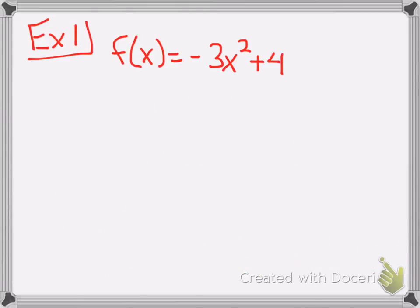First example, we're going to determine if it's even, odd, or neither. What I'm going to do to determine whether it's even, odd, or neither is I'm going to rewrite the function. I'm going to use negative x as my new input. It's all about negative x. I'm going to plug in negative x for every x in the function.